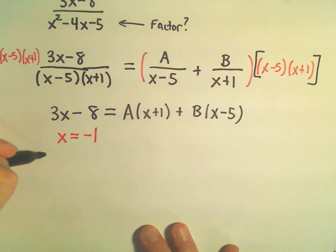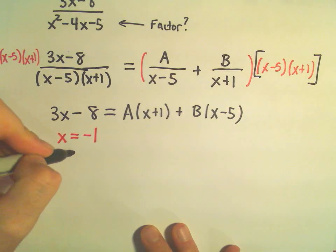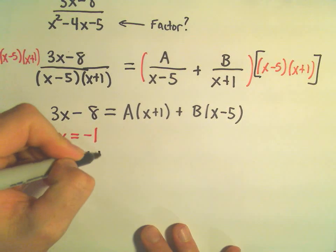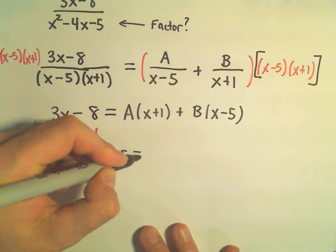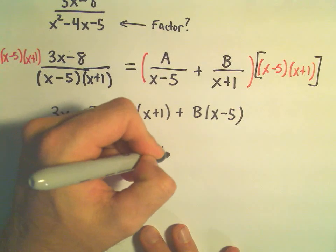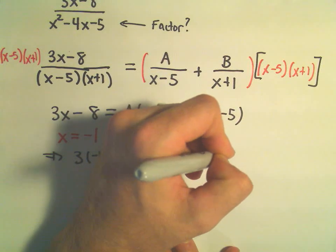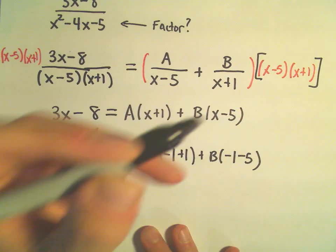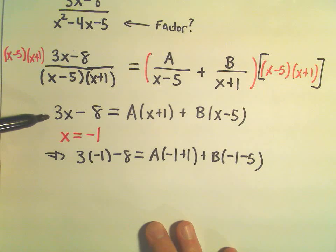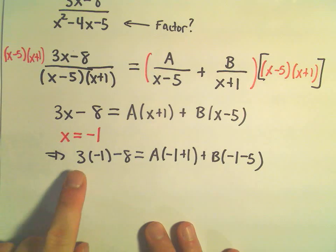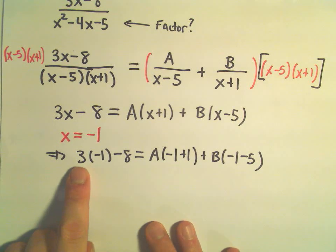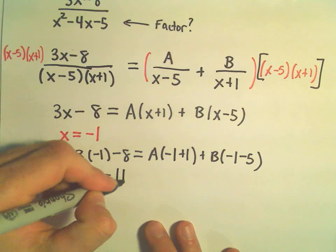I have to do it on both sides. So I get 3 times negative 1 minus 8 equals A times, well, negative 1 plus 1, and then we'll have B times the quantity negative 1 minus 5. So I just took my equation. I plugged in negative 1 everywhere. If we do the arithmetic on the left, we'll get negative 3 minus 8, which is negative 11.